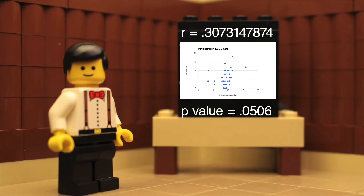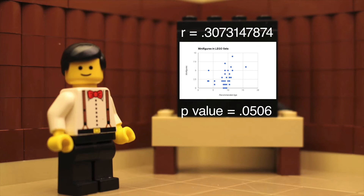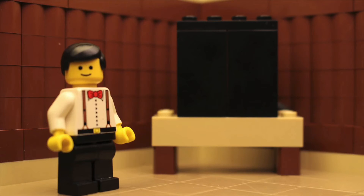The r-value came out to 0.3073147874, indicating an extremely weak correlation. The p-value from the linear regression t-test was also greater than alpha equals 0.05, which did not give us good enough evidence to support the alternate hypothesis.